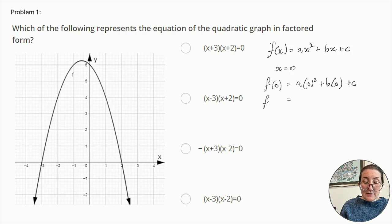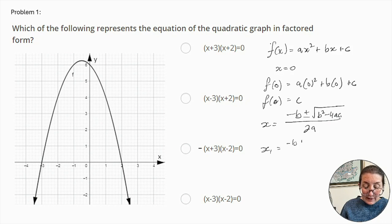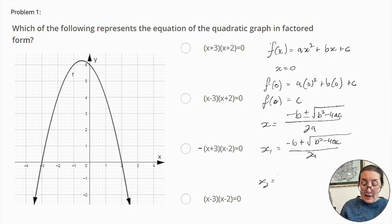f(0) = c. To determine the x crossing points, or where y = 0, we use the formula x = (−b ± √(b² − 4ac)) / 2a. This can be written as x₁ = (−b + √(b² − 4ac)) / 2a, and x₂ = (−b − √(b² − 4ac)) / 2a.